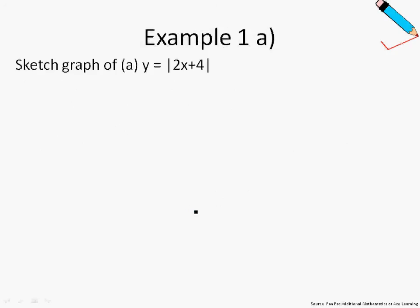In Example 1a, we are asked to sketch the graph of y equals mod of 2x plus 4. Let me just highlight what are the steps that we will go through. The first step would be to sketch the graph of 2x plus 4, which is what we also call a function of x. What you see here on the screen now is this graph of y equals 2x plus 4. And how do you sketch such a graph?